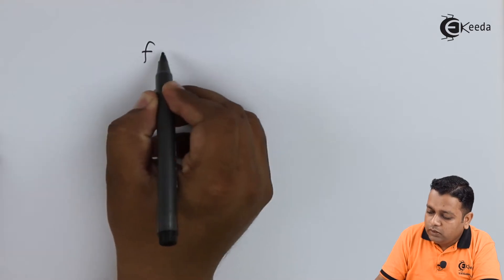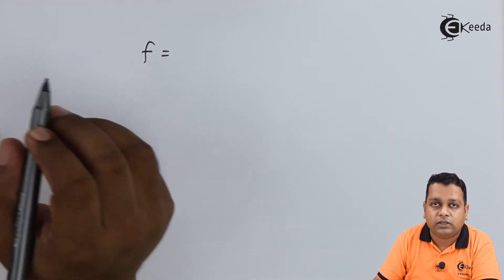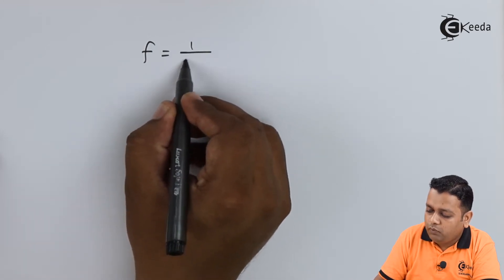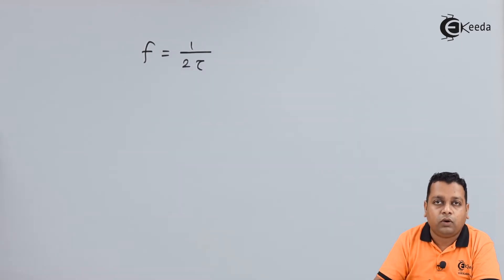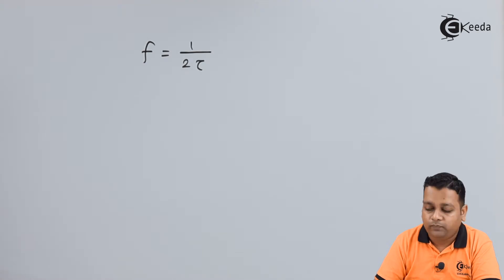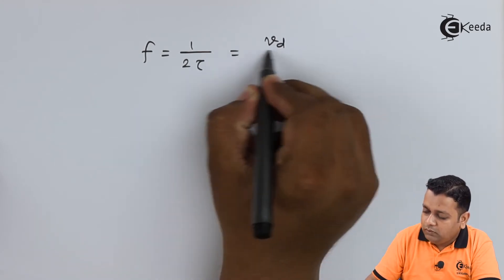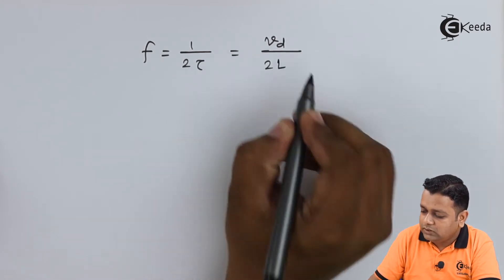With respect to this IMPATT Diode, the solution can be obtained by making use of a formula. In this formula, the frequency F is related with the time by 1 upon twice tau, where tau is the transit time. Further, the frequency is related with the drift velocity and the specimen length by the relation F is equal to drift velocity Vd by twice capital L.